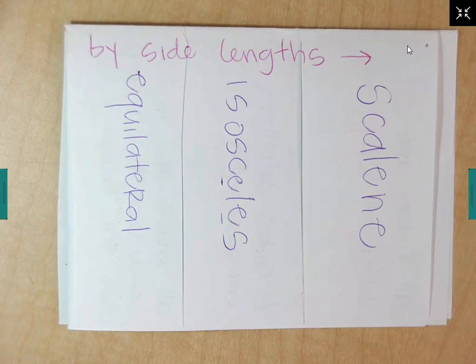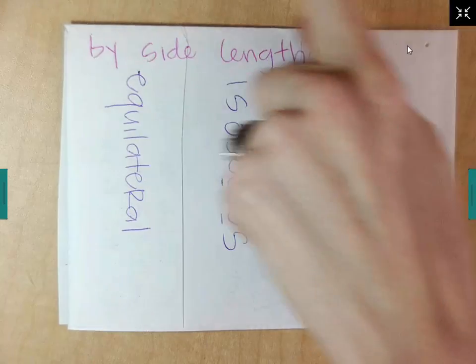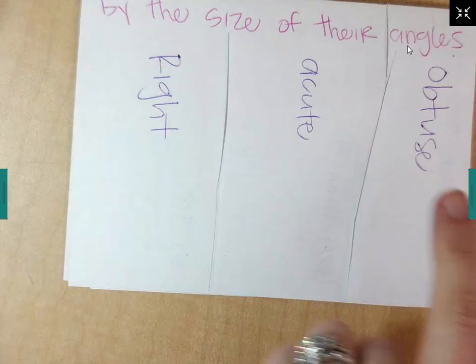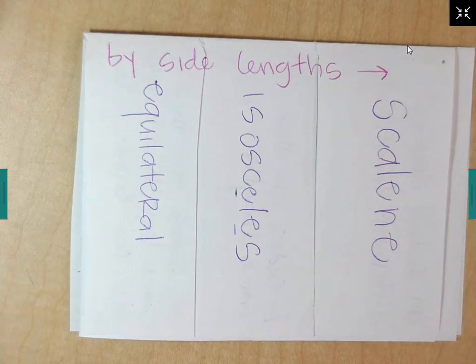So the first three terms that we're going to look at are going to refer to how long their sides are. Two different ways that we're going to be measuring these triangles. One way we're going to measure them is how long their sides are. The other way we're going to measure them is the size of their angles. So every single triangle can be called one of these things right here, or and one of these things right here. So right now we're just going to look at calling them a name according to how long their sides are.